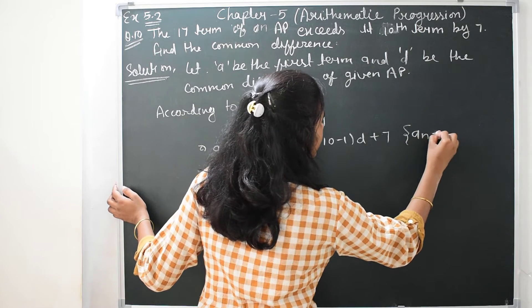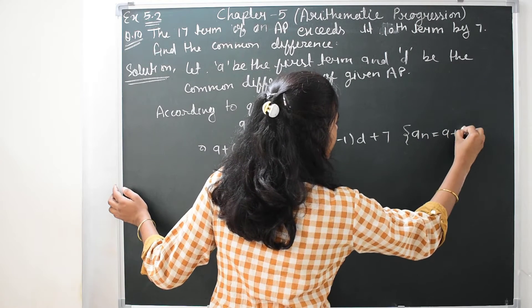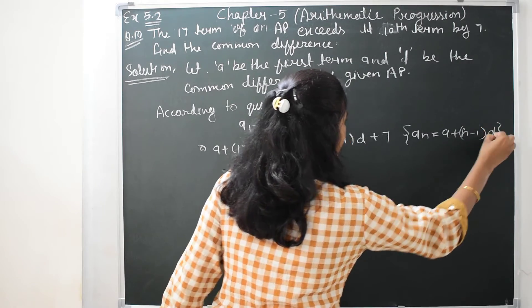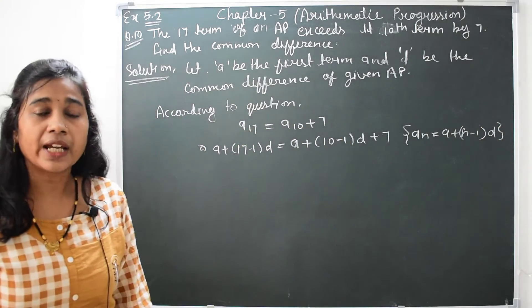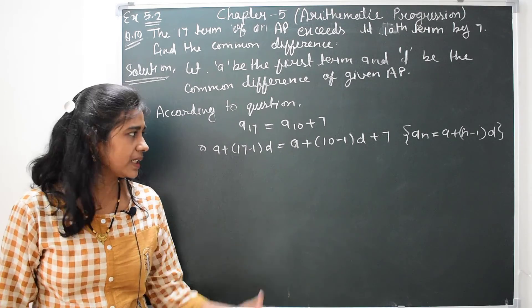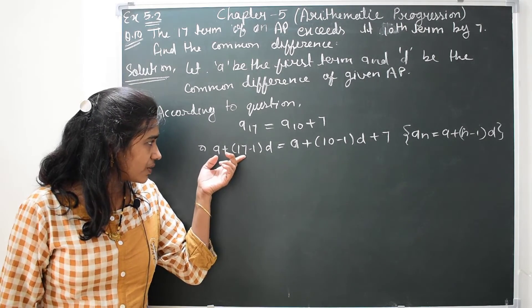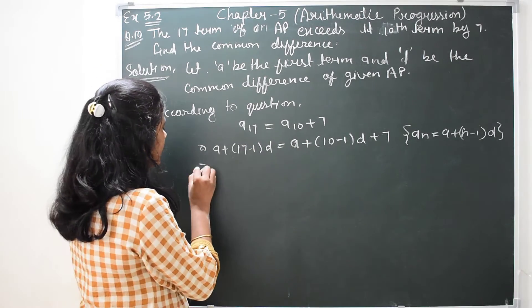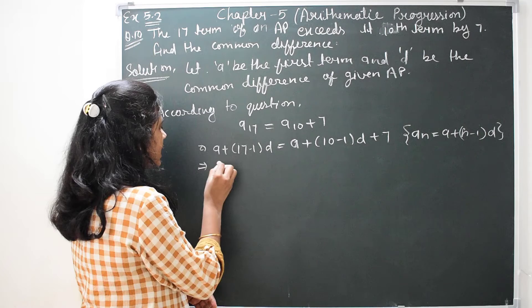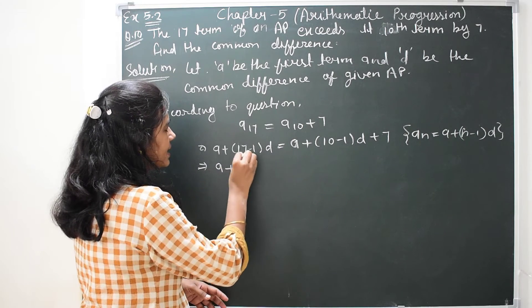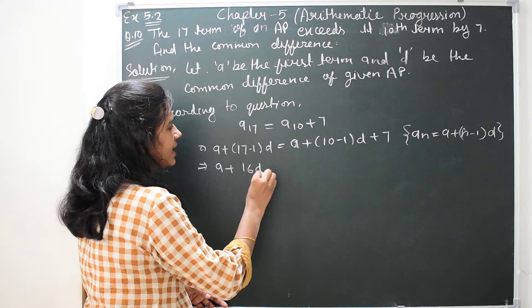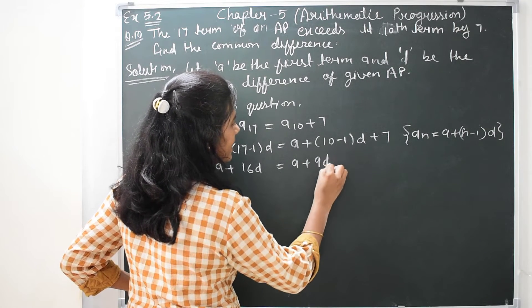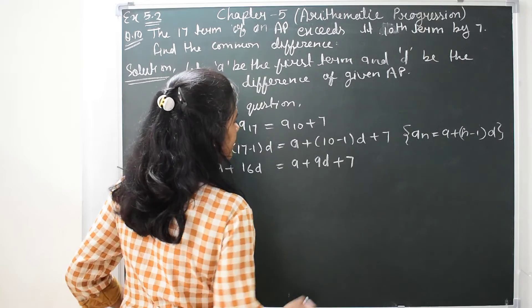The nth term formula is A_n equals A plus n minus 1 times D. So the 17th term is A plus 16D. The 10th term is A plus 9D. Therefore, A plus 16D equals A plus 9D plus 7.